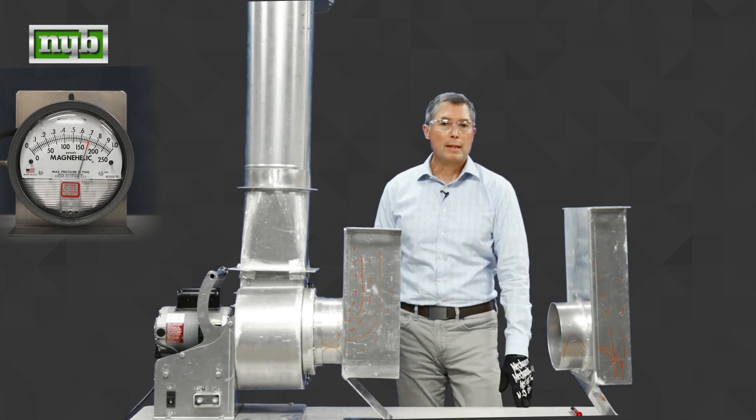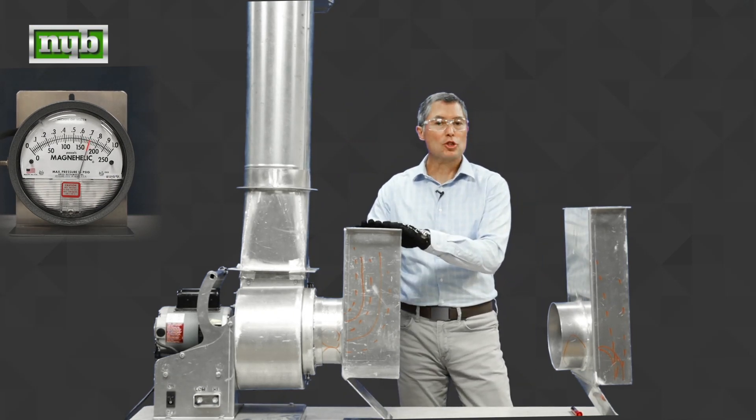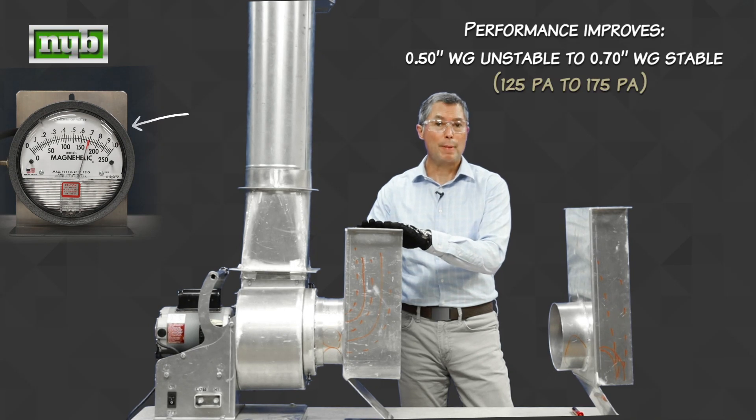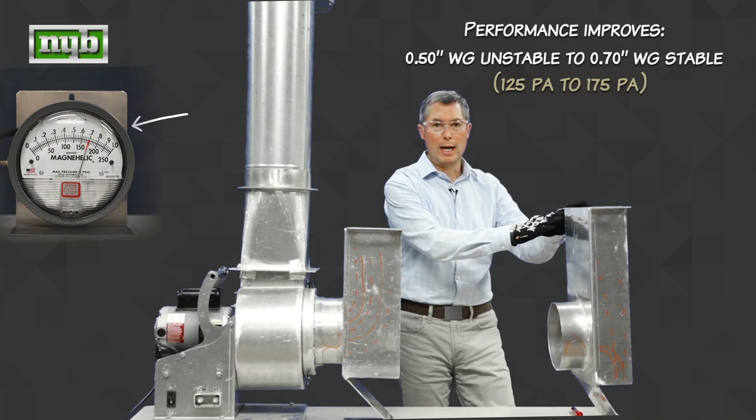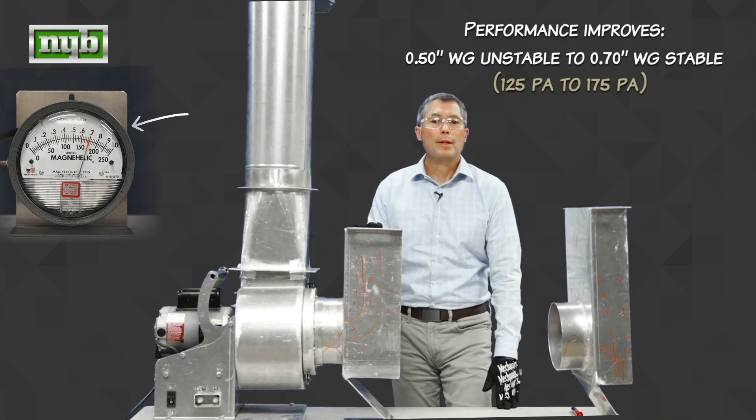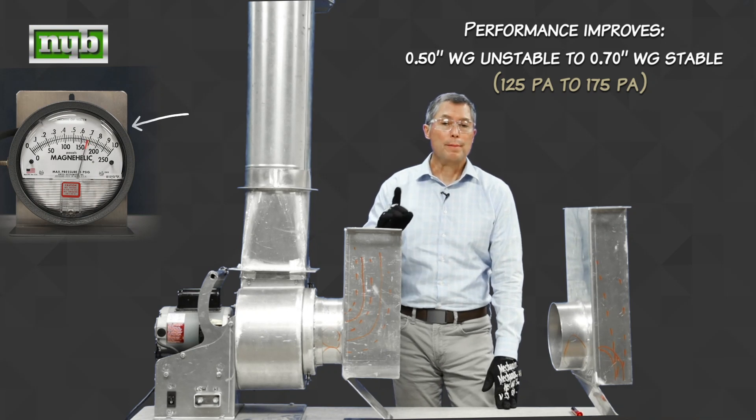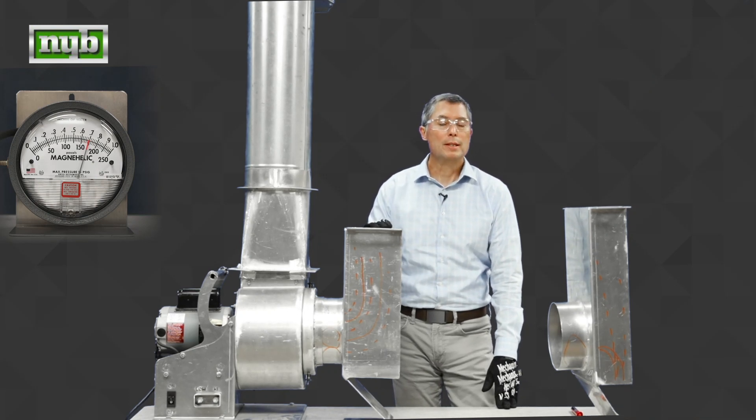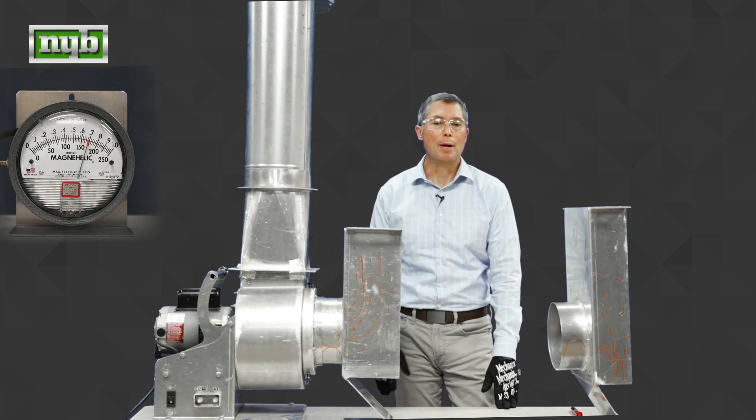Okay, looking at the Magna Helic, you'll notice that there's a substantial improvement in performance with this box design over this box design. Secondly, the needle or the marker on that Magna Helic gauge is much more steady. It's not bouncing up and down.